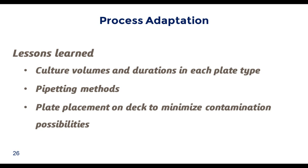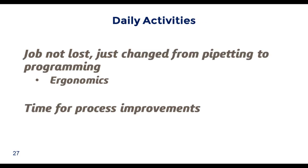The workflow must be adapted to the automated platform. Lessons learned include: culture volumes and durations for optimal growth in each plate type were determined; pipetting methods were written and optimized for speed, incorporating air gaps and tip touching where necessary; plate placement on deck was modified to minimize contamination possibilities; and plate locations were selected where the pipetting head crosses over the least amount of culture area. Through this process, the daily activity of a cell line developer evolves from pipetting to programming — teaching a robot how to pipet and supplying it with necessary inputs.